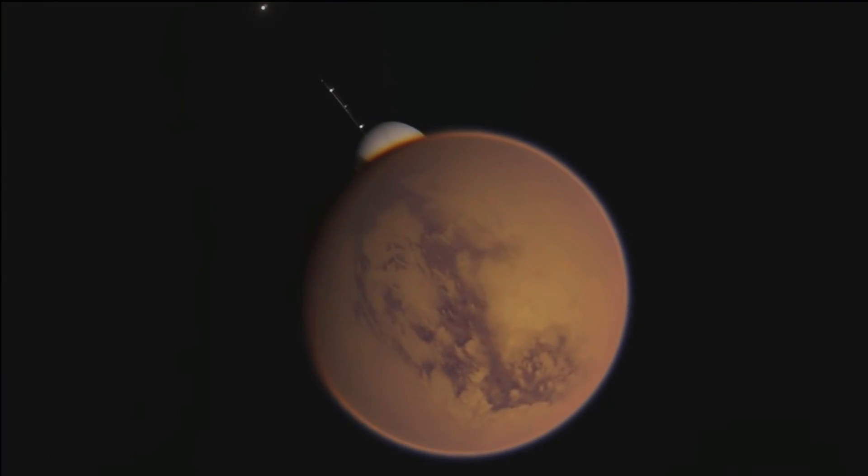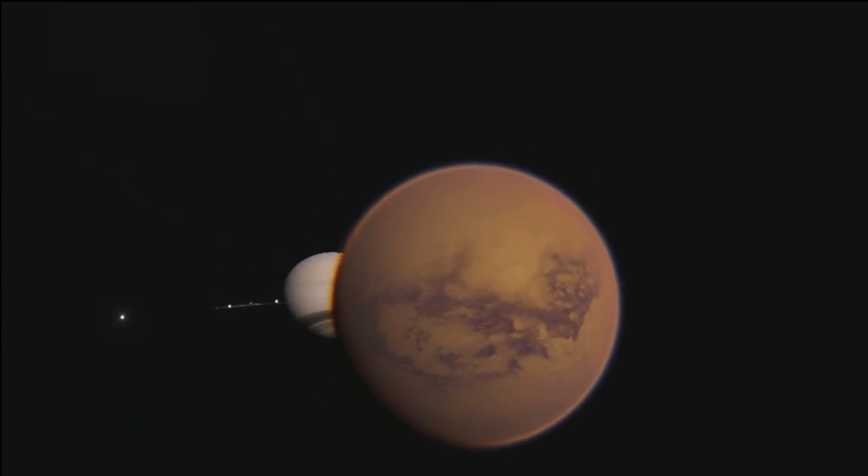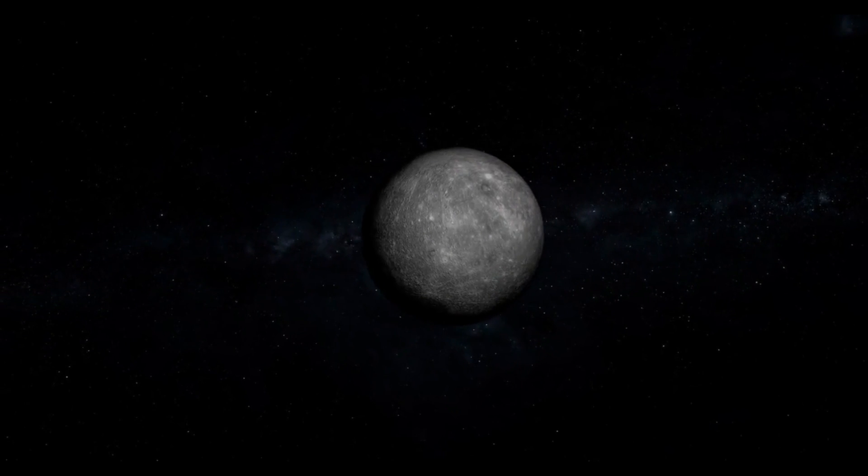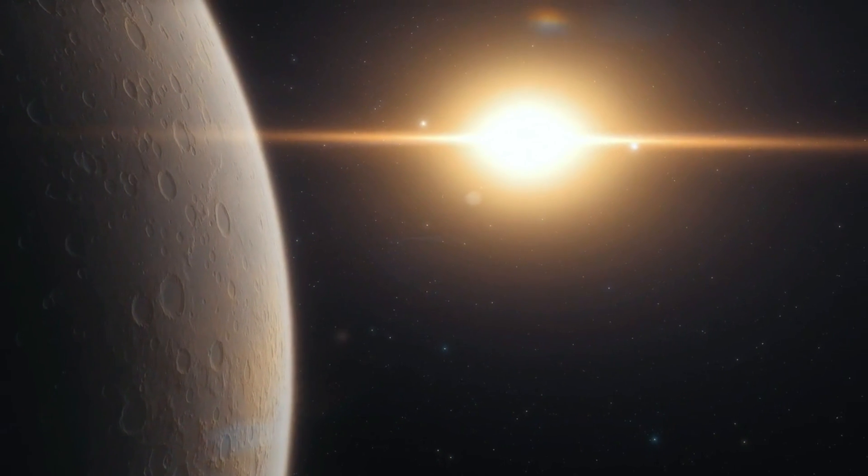Titan is Saturn's largest moon and it's enormous. It has a diameter of 3200 miles which makes it larger than Mercury and only slightly smaller than Mars.